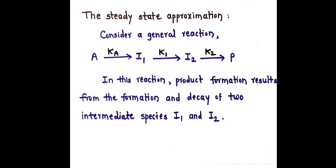Ka is the rate constant for the first reaction, K1 is the rate constant for the second reaction, and K2 is the rate constant for the third reaction. In this reaction, product formation P results from the formation and decay of two intermediate species I1 and I2. So I1 and I2 are formed and undergo decay and finally give us product P.